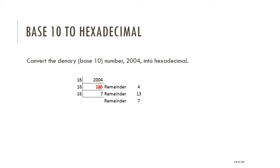When you take 2004 divided by 16, you get 125 with a remainder of 4. Write that down. Then take 125 divided by 16 — you get 7 with a remainder of 13. Now if you try to divide 7 by 16, of course 16 is larger than 7, so you can't divide it.